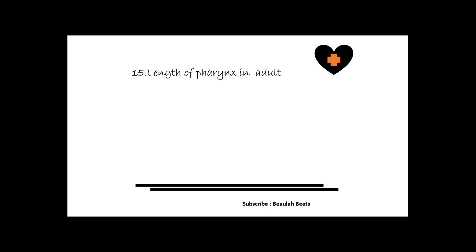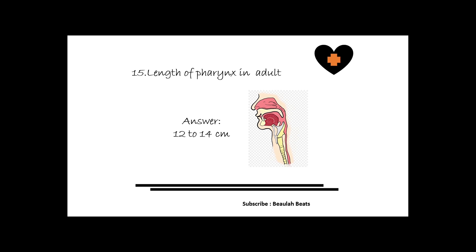The fifteenth question is: what is the length of the pharynx in an adult? The answer is 12 to 14 centimeters. It is the hollow tube inside the neck that starts behind the nose and ends at the top of the trachea and esophagus. It is divided into the nasopharynx, oropharynx, and hypopharynx.